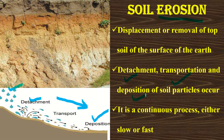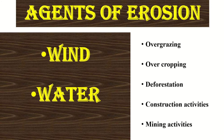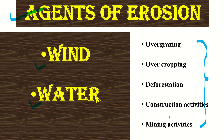Soil erosion is a continuous process and it is either very fast or slow. The various agents of erosion include wind and water, which we will concentrate on in this lecture. Apart from these two, other factors that also contribute to soil erosion are overgrazing, overcropping, deforestation, construction activities, and mining activities.